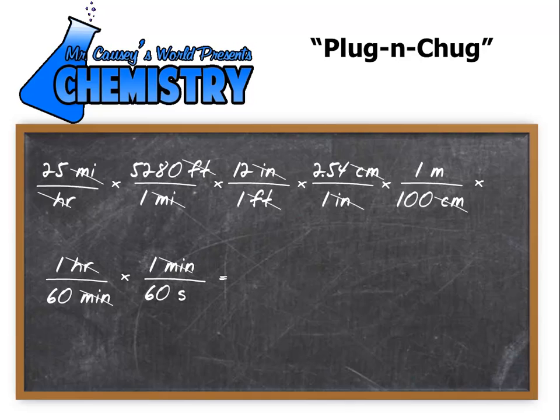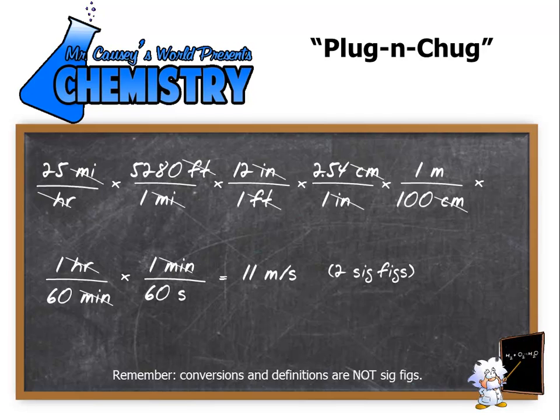Put it into your calculator. Enter 25 times 5,280 times 12 times 2.54 divided by parentheses 60 times 60 close parentheses. Hit enter. And you should get 11 meters per second if you use two sig figs. Remember the only sig fig number was the 25. Conversions and definitions are not sig figs.